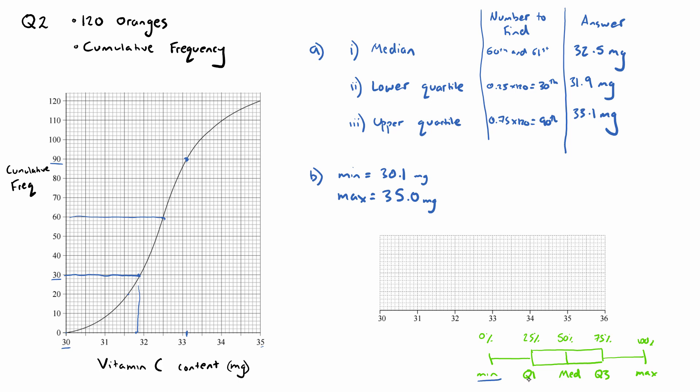So the minimum value, the lower quartile or otherwise known as Q1, the median, the upper quartile otherwise known as Q3, and the max. And as long as you have those five key pieces of information, drawing the box and whisker diagram is actually pretty easy.